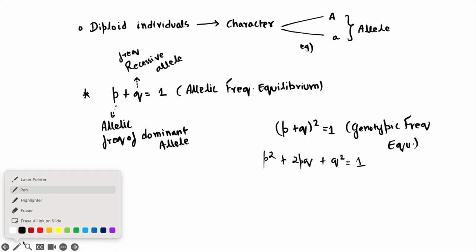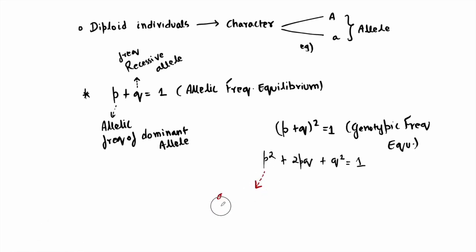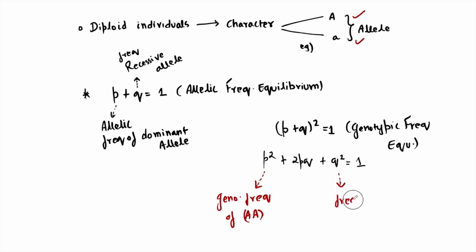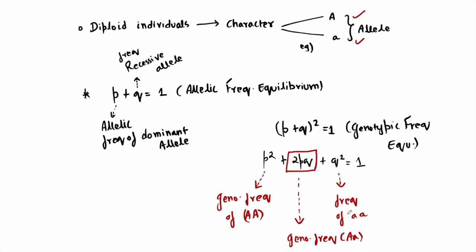In genotypic frequency equilibrium, expanding (p + q)² gives p² + 2pq + q² = 1. Here p² refers to the genotypic frequency of the homozygous dominant individual (AA), q² represents the genotypic frequency of the homozygous recessive individual (aa), and 2pq refers to the genotypic frequency of the heterozygous individual. This is just a quick recap — for diploid individuals there are two alleles for a respective character.